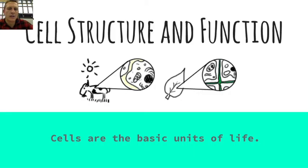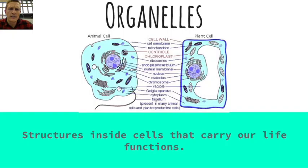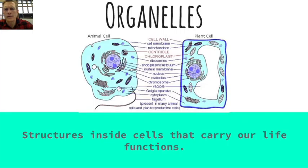Cells are the basic units of life. They are the functional part of living things as well as the structural part of living things. You should also know that all life comes from life — in other words, new cells arise from previously existing cells. That's the cell theory in a nutshell. Cells are made up of things called organelles, which are tiny little structures inside the cell that carry out each of our life functions. Certain organelles are located only in plant cells, some only in animal cells, and other types of cells don't have that many organelles at all.